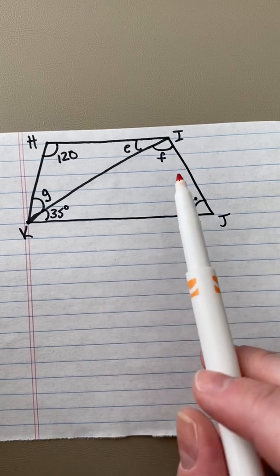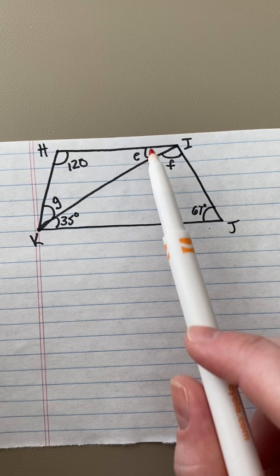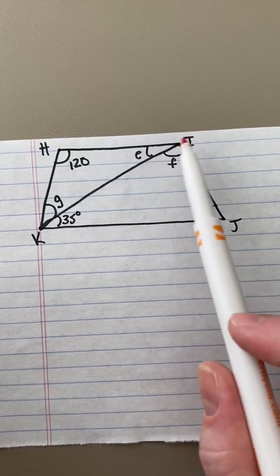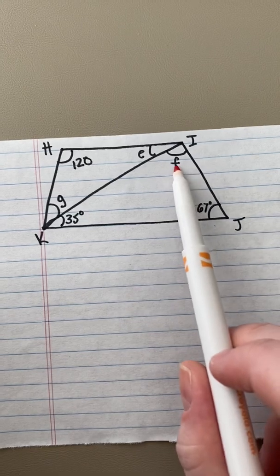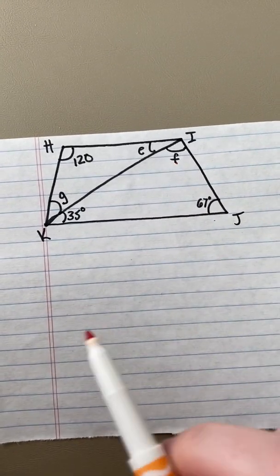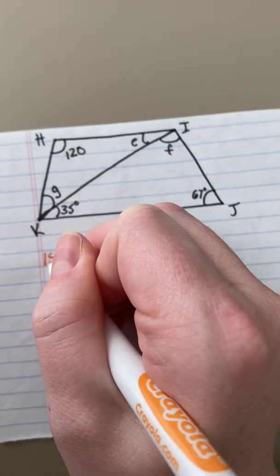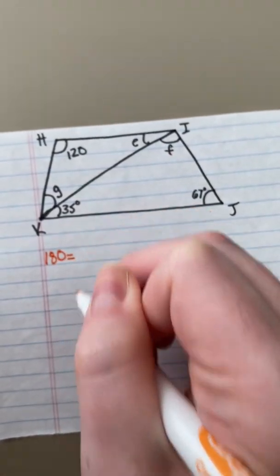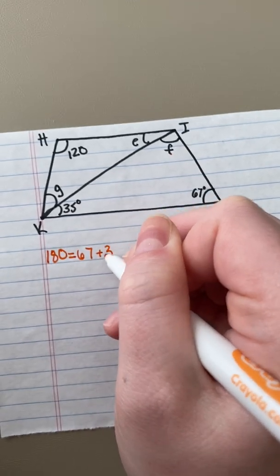I'm first going to start with solving for angle F. Angle F is a part of the big angle I, and I is made up of angles E and F. So I need to solve F, and I'm going to use the property of triangles to help me. I know that triangles equal 180 degrees, and there are three angles that make up a triangle.